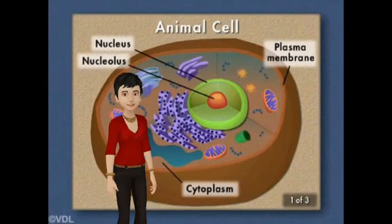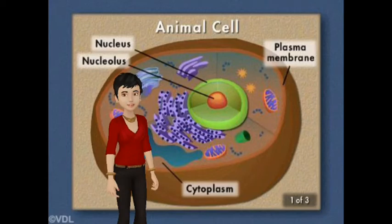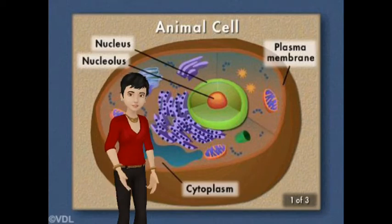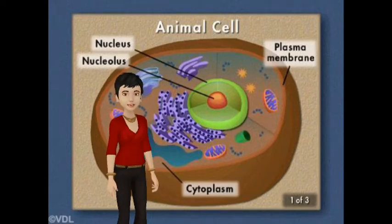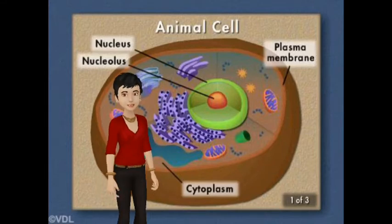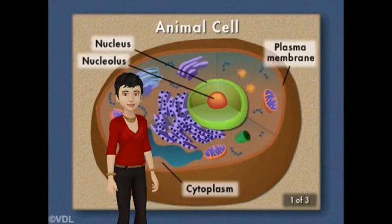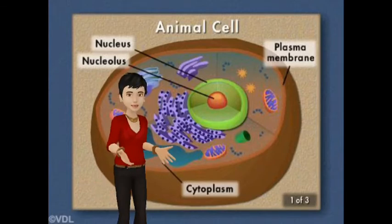I went to Discovery Education and got this copy of an animal cell for you. Notice that in the center is the nucleus. All the other organelles we see are needed by the cell. The cytoplasm is the jelly-like goo around it. Notice that the cell is not rigid — it can move and change shape. That's because there's no cell wall.